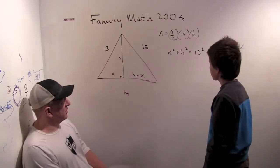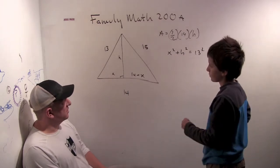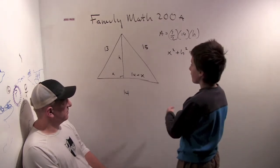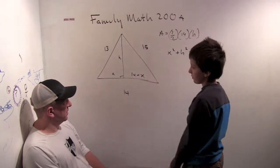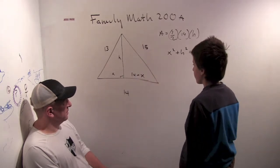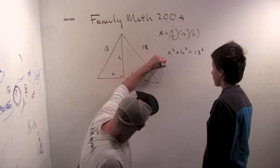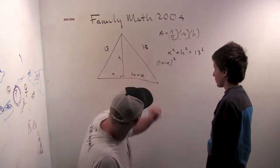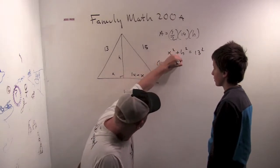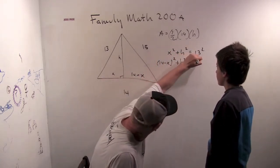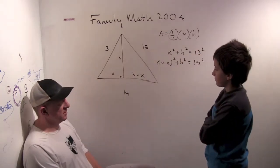Do you see any other equations that relate x and h in this diagram? Well, we could do the other right triangle. We have 14 minus x squared plus h squared is 15 squared. Interesting.